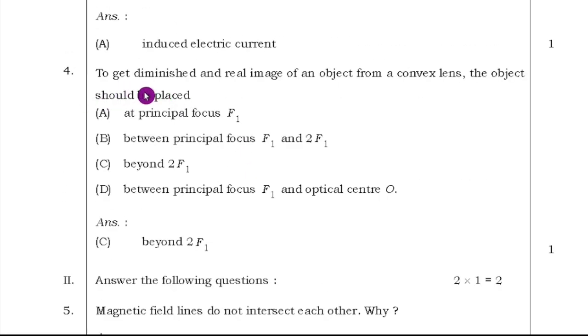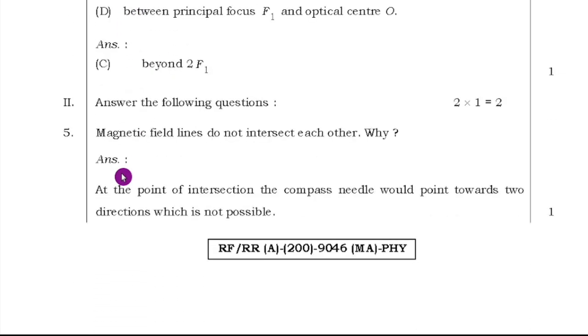Fourth question, to get diminished and real image of an object from a convex lens, the object should be placed at beyond 2F. In the given option, option C is the right answer. These are all multiple choice questions.